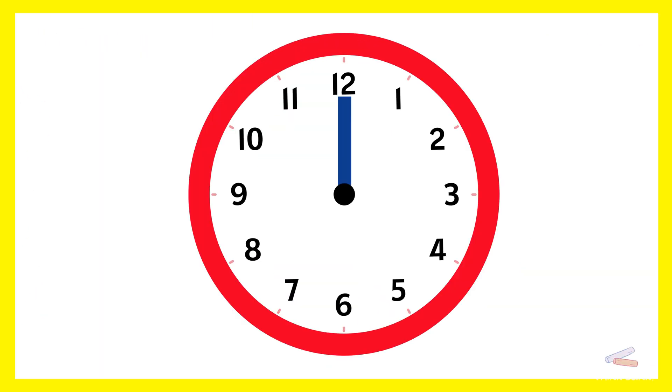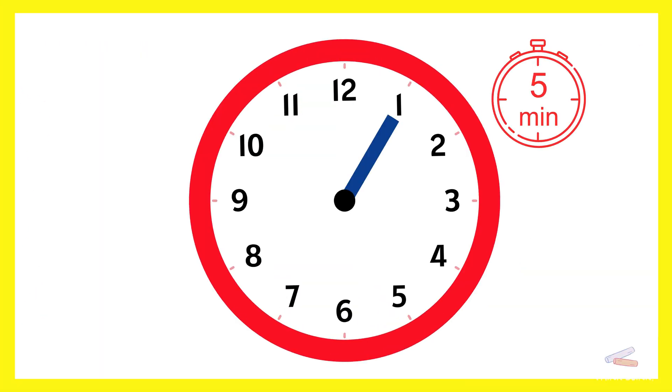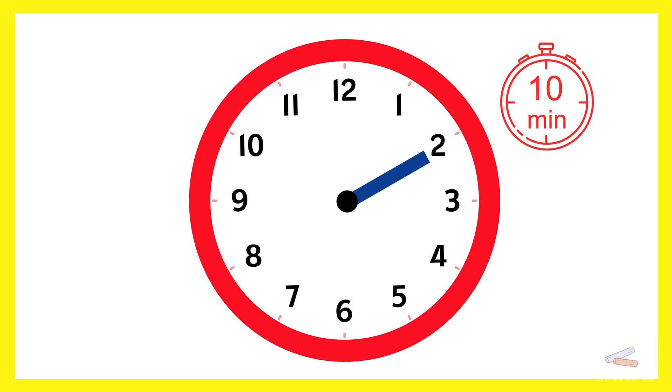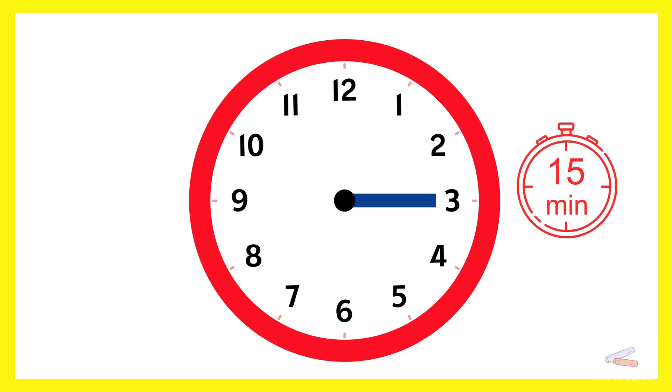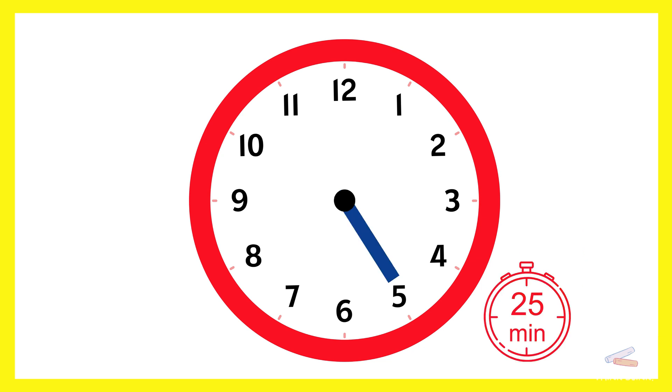The minute hand moves around the clock to count minutes. It starts at the top 12 and goes all the way around. When the minute hand moves from one number to the next, 5 minutes have passed.